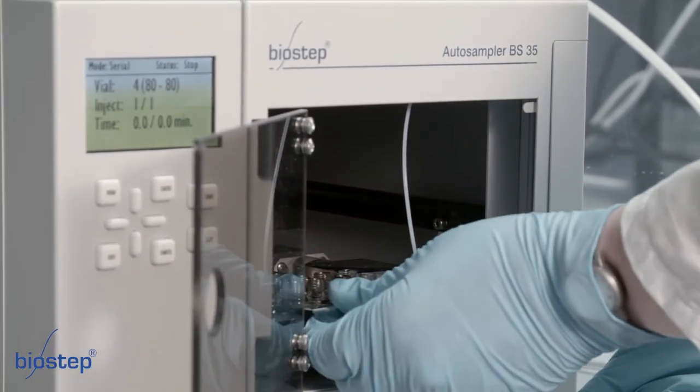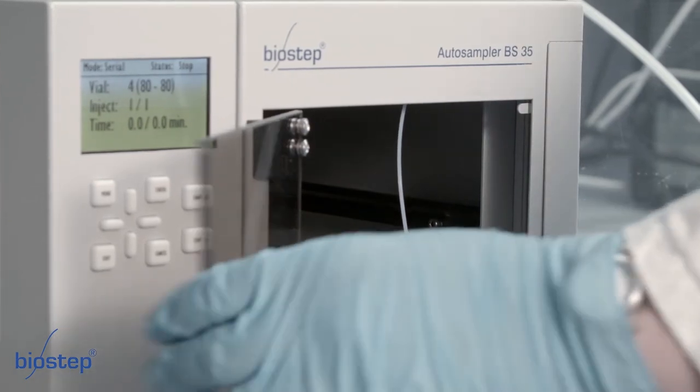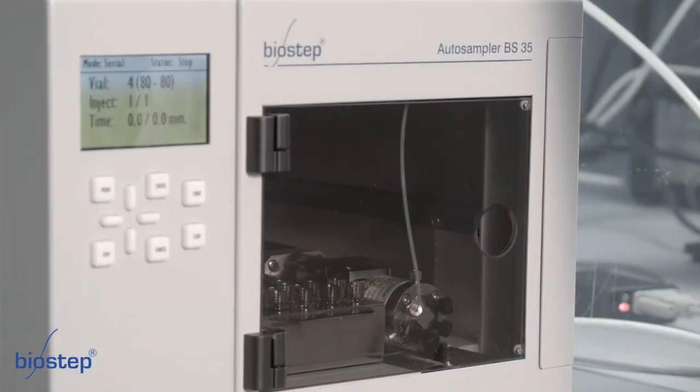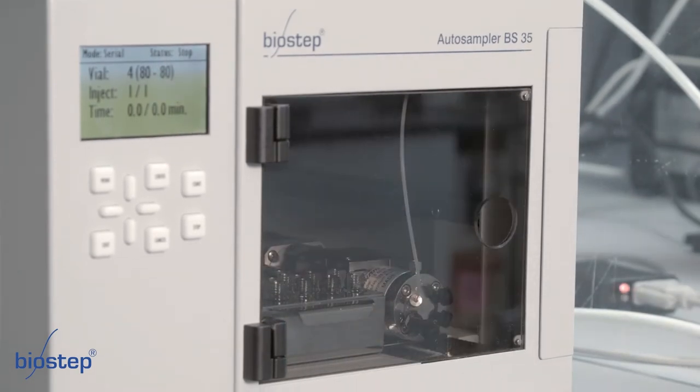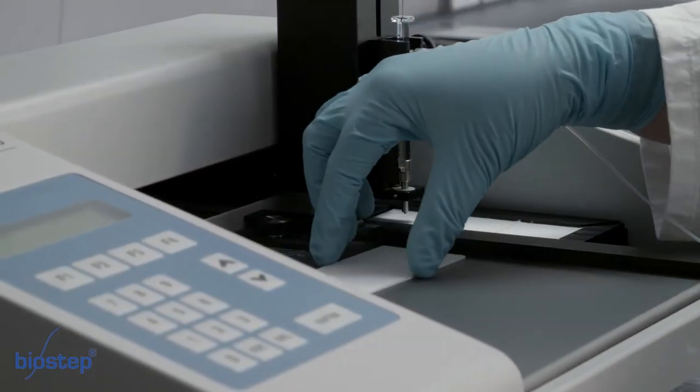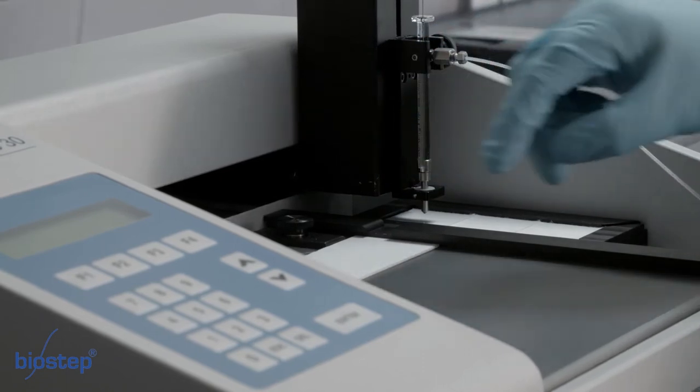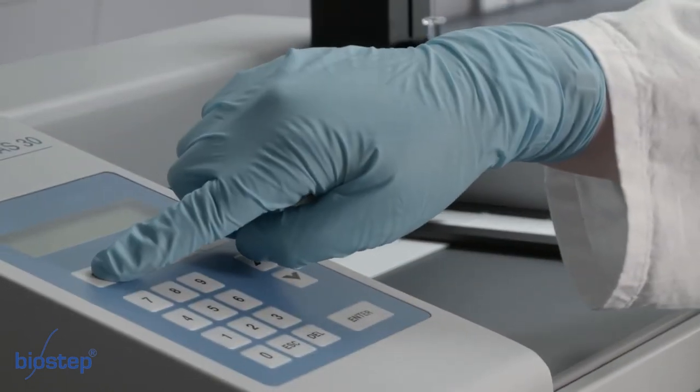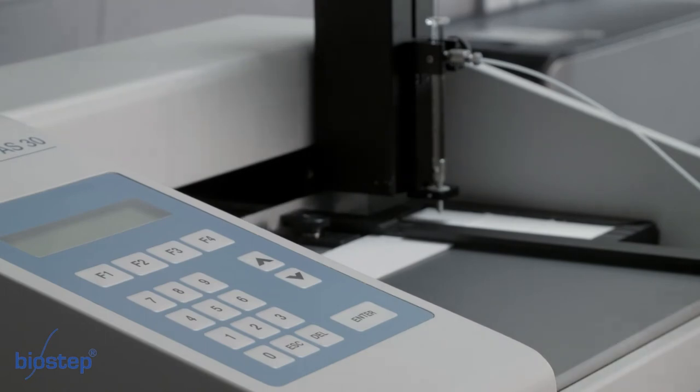Put the rack in the auto-sampler. There is only one way to position the same. The pins at the bottom have to fit with the holes in the bottom of the auto-sampler. Now position the TLC plate on the applicator. Start the program at AS30. The TLC plate will automatically be fixed.